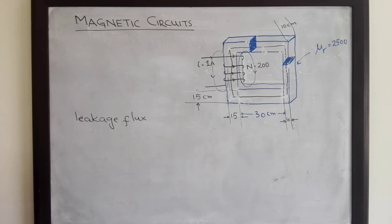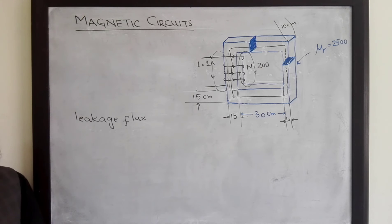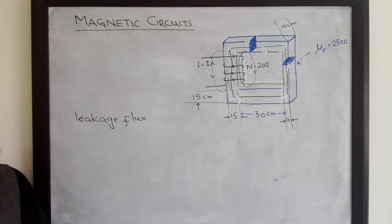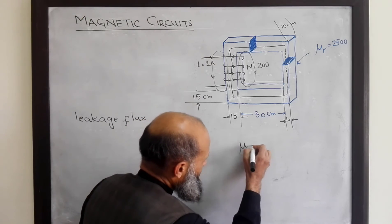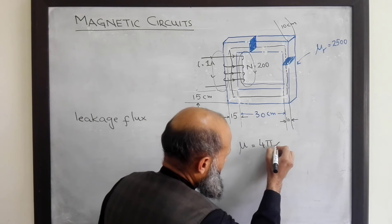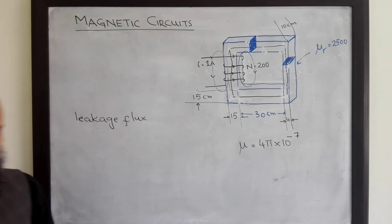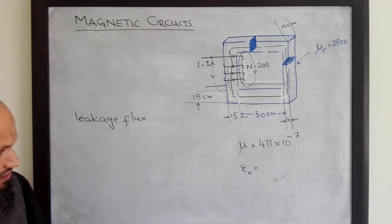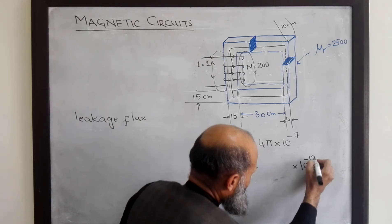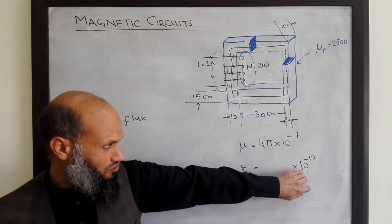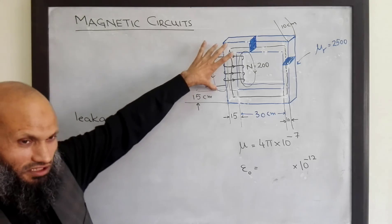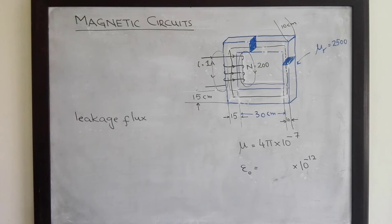Is there any leakage current in electrical circuits? Yes, there is, but leakage current is very, very small. This is because the permittivity of free space is of the order of 10⁻¹², much smaller than the permeability of free space at 4π × 10⁻⁷. Therefore, in magnetic circuits there is significant leakage flux, which we have ignored, and therefore these calculations are less accurate.